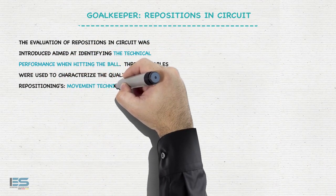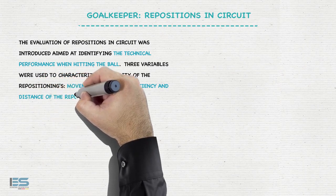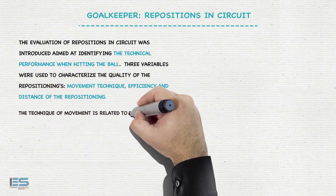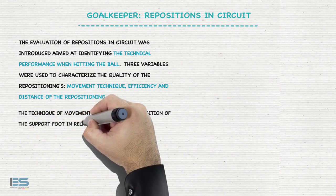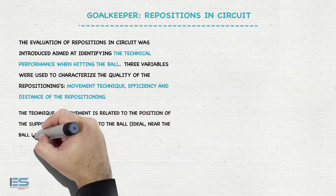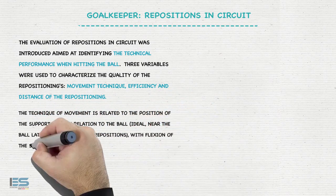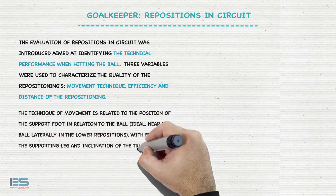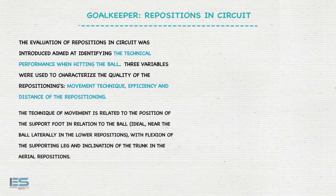The three variables are: movement technique, efficiency, and distance of the repositioning. The technique of movement is related to the position of the support foot in relation to the ball — ideally near the ball laterally in the lower repositions, with flexion of the supporting leg and inclination of the trunk in the aerial repositions.